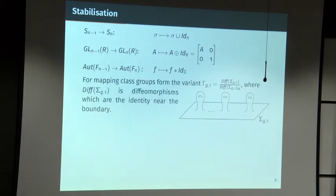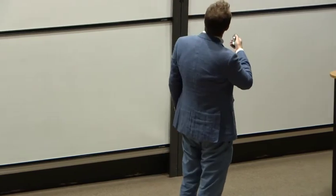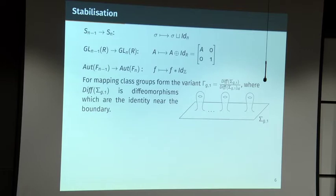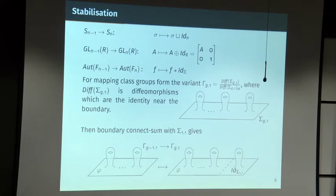For surfaces it's a little fiddly — I need to think about surfaces that have a boundary. I look at diffeomorphisms of a genus-g surface with one boundary component that are the identity near the boundary, modulo isotopy. That gives a discrete group Γ_{g,1}. The advantage of having a boundary is that I can compare surfaces of different genus: given a diffeomorphism of a genus-(g−1) surface, I adjoin a genus-1 surface and extend by the identity, which works because diffeomorphisms were already the identity on the boundary.